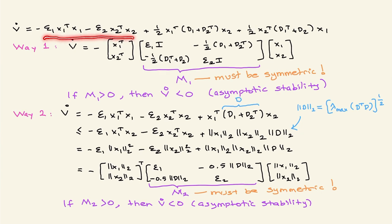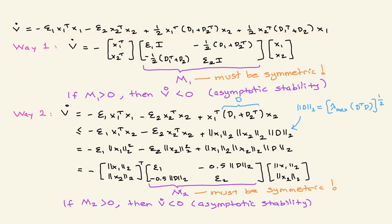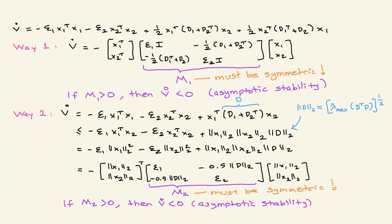Now I have the Lyapunov equation after those algebraic manipulations. I will discuss Way 1 of four ways in Lyapunov analysis. In Way 1, I group the terms depending on x1-transpose x1 — which involves epsilon, so I insert an identity — and x2-transpose x2 with a minus sign outside. I insert the one-half d1 d2-transpose and the last term. The purpose of these manipulations is that to claim V-dot less than or equal to zero, this matrix M1 must be positive definite.